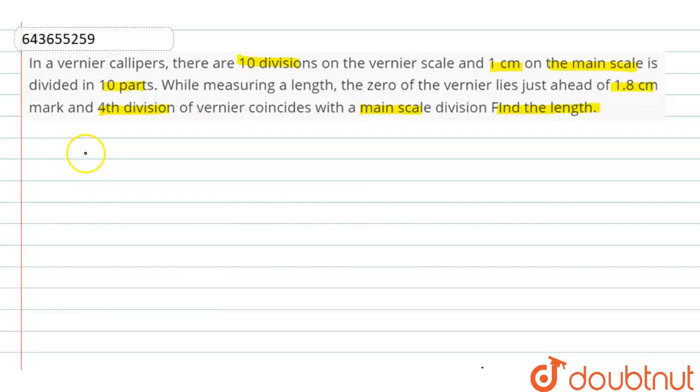We know that the least count of Vernier caliper is 0.01 centimeter. According to the question, the main scale reading is 1.8 centimeter.